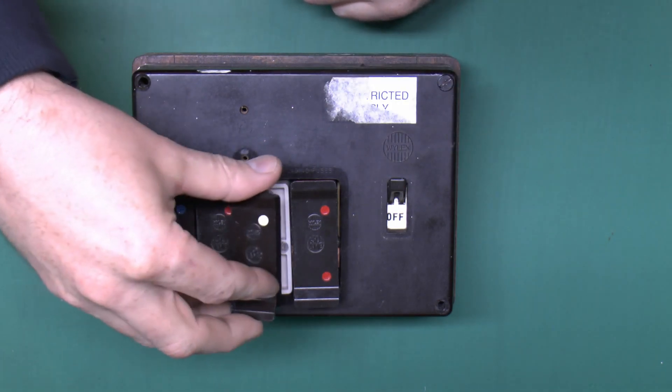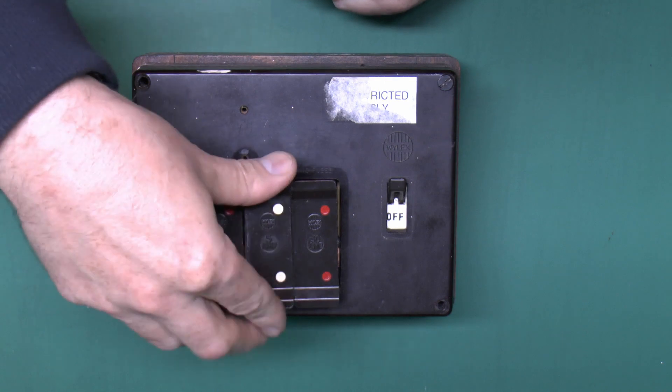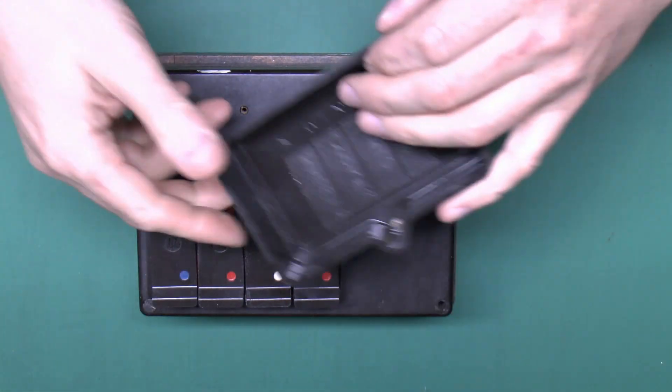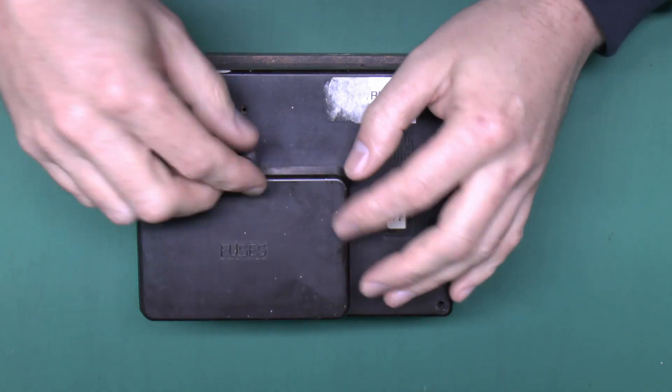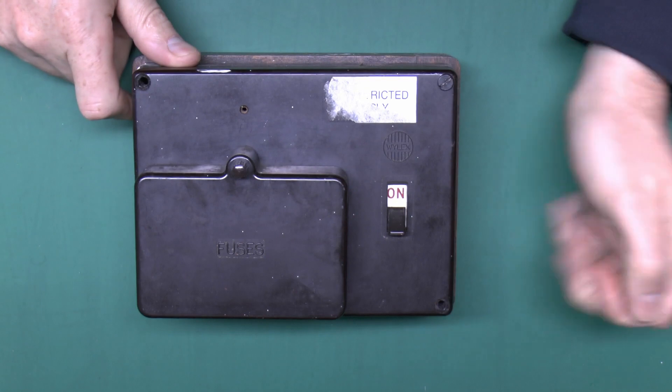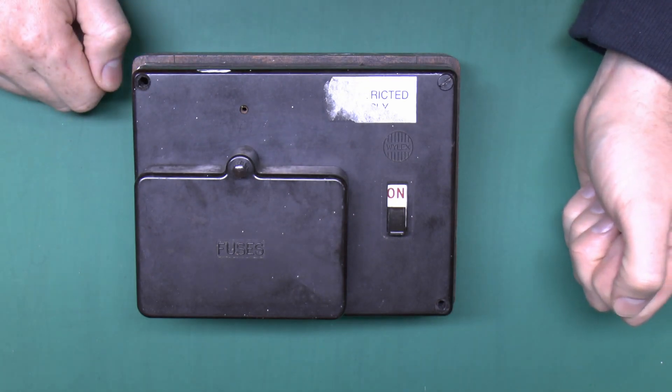So switch off, the fuse just presses back into the hole it came out of. You should have one of these covers, so put that cover back on, and then you can switch on. And that should restore the power.